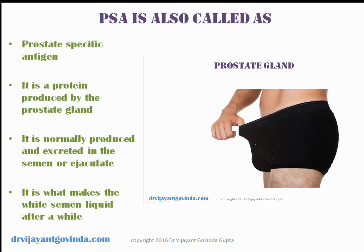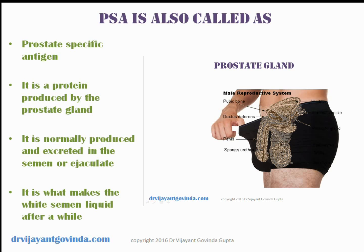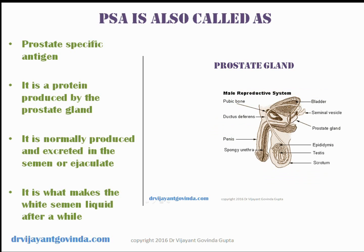What is PSA? PSA is also called prostate specific antigen. It is a protein that is produced by the prostate gland. The prostate gland is an accessory sex organ which is present in the male genitalia.